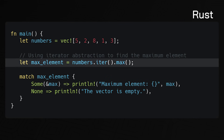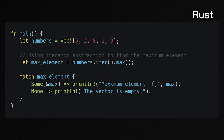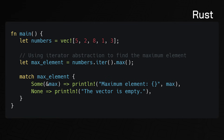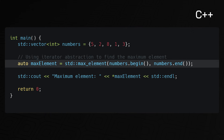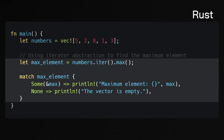Here's the same code in Rust. We turn the vector into an iterator by calling the iter method, then find the greatest element by calling the max method. We're actually using a few zero-cost abstractions: the iterator abstraction, the option enum, and pattern matching. Rust builds on the zero-cost abstraction principle by further emphasizing memory safety — unlike C++, the max method returns an option type, so calling it on an empty vector simply returns the none variant rather than causing undefined behavior.